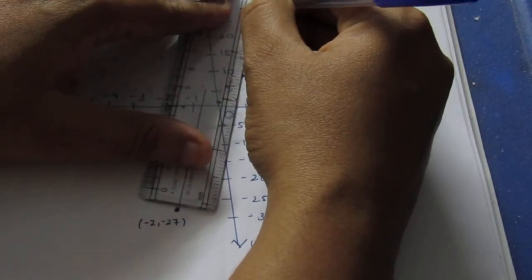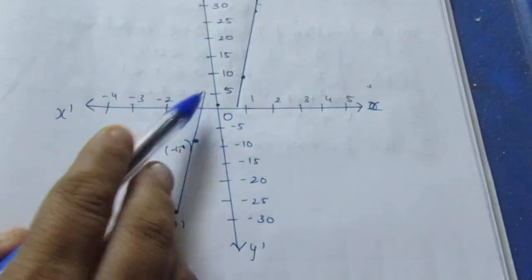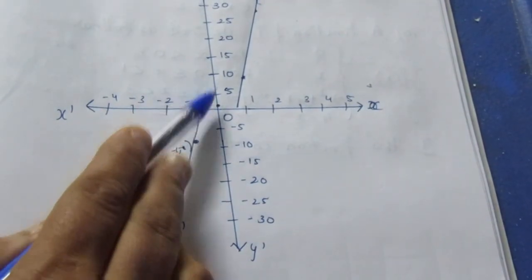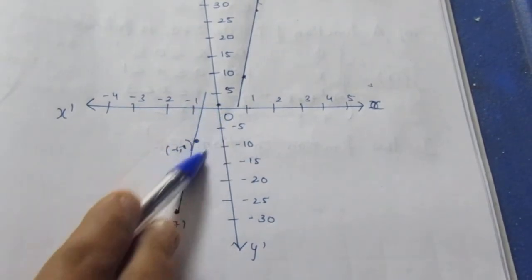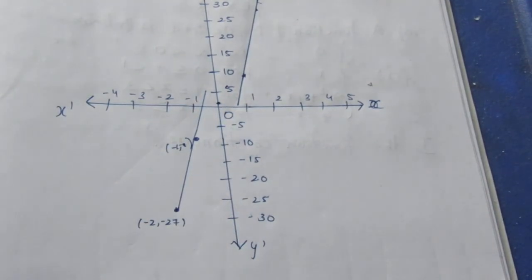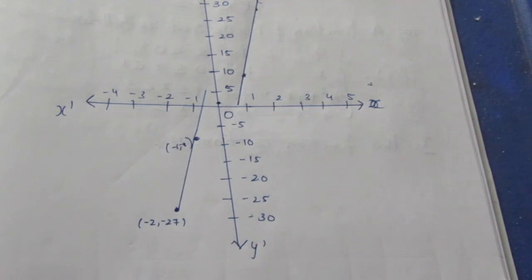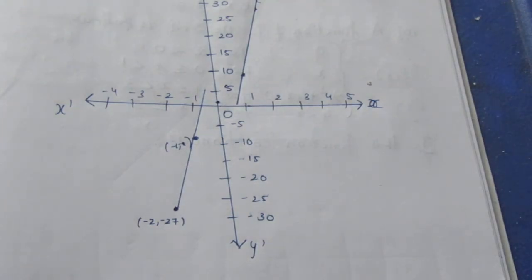If you look at these two pieces of the graph, there is a break at x equals 0. That's why we say f(x) is not continuous at x equals 0. That's the sum. Thank you.